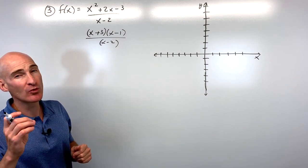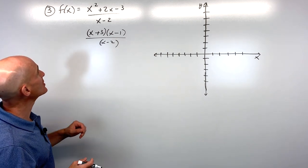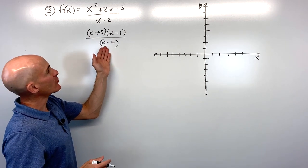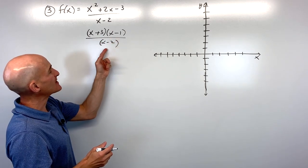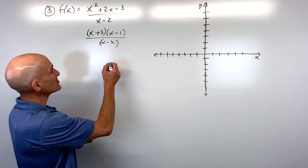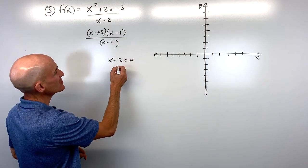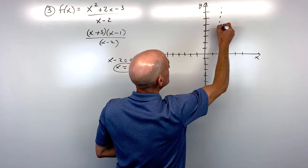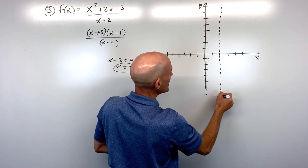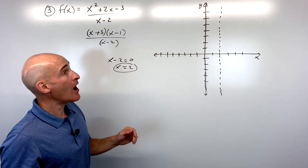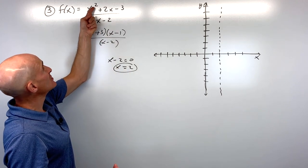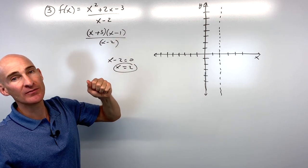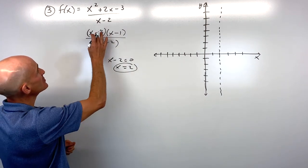Setting the denominator's factor equal to zero: x-2=0 gives x=2 as our vertical asymptote.